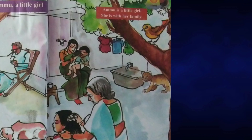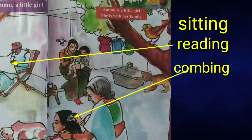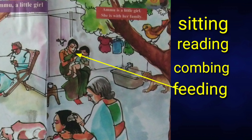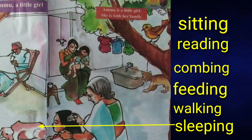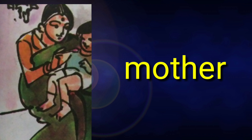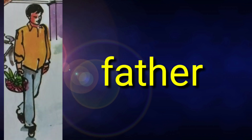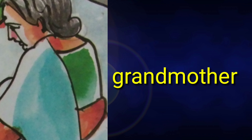Very good children. These are some actions: sitting, reading, combing, feeding, walking, sleeping. All these are actions. Children, let's try to read the picture: mother, father, brother, grandmother, grandfather.